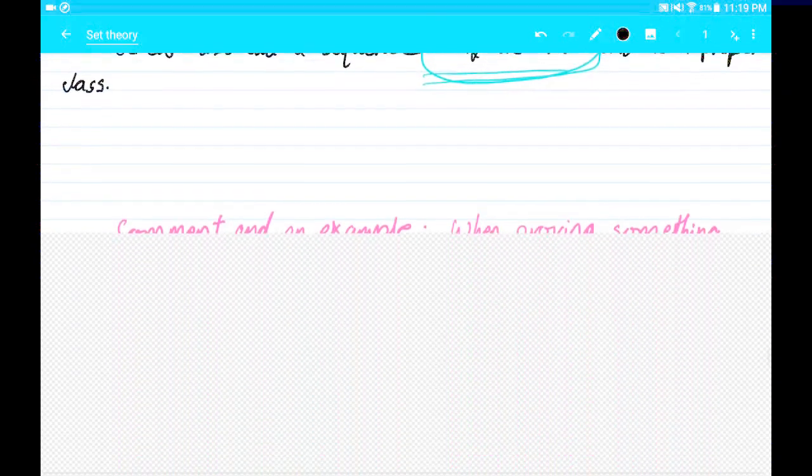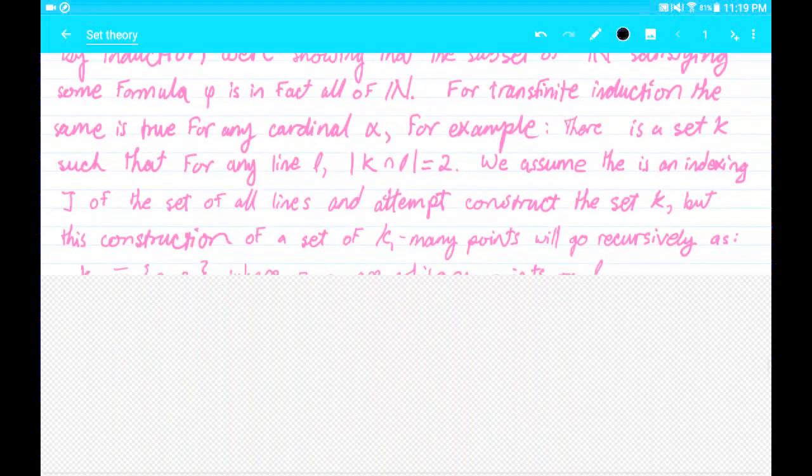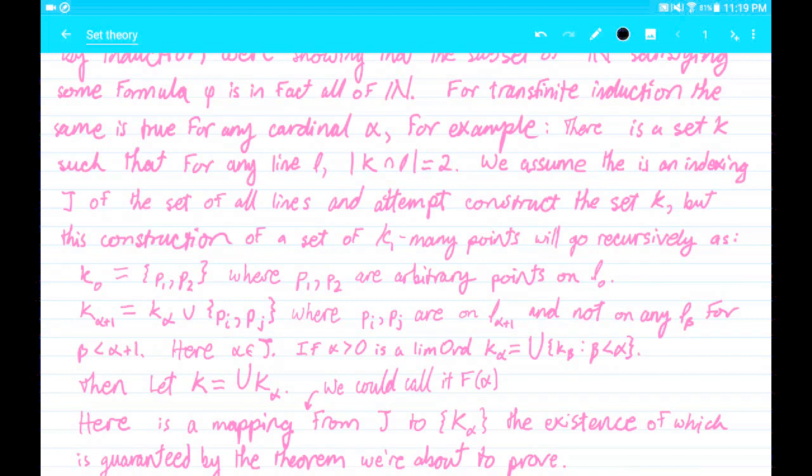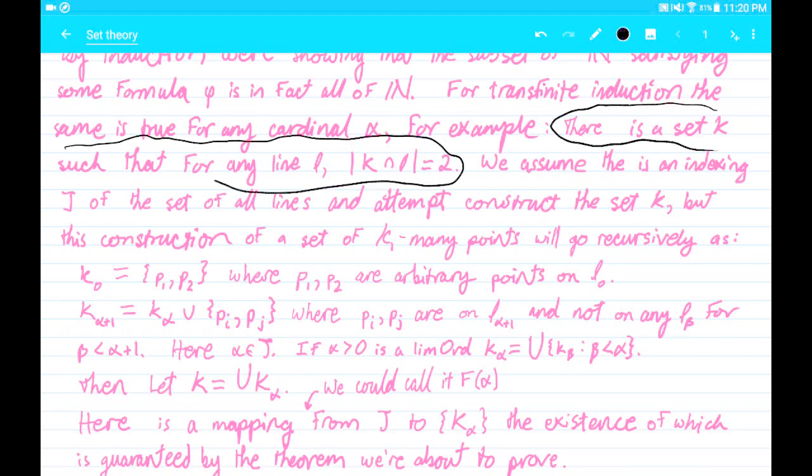So that's a comment on transfinite induction. Now for an example about transfinite recursion, let's talk about this claim, this theorem, to illustrate and motivate the definition. There exists some set k of points in the plane such that for any line in the plane, it intersects k in precisely two places.